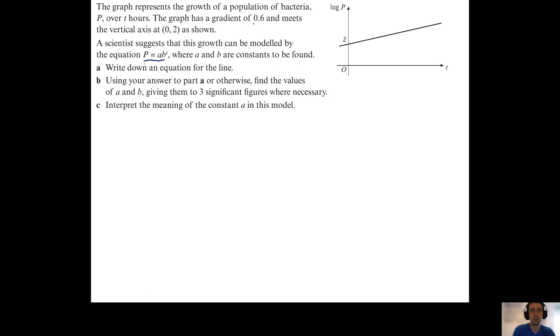Now if we're given that the gradient is 0.6 and that the intercept is 0.2, then the temptation for part a here would be to write that y equals 0.6x plus 0.2, which is fine. We've just got to think a little bit about what the variables are that we're dealing with in this particular scenario.